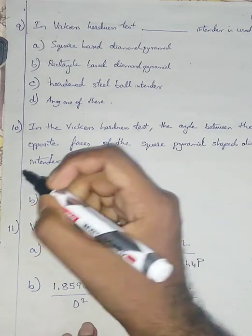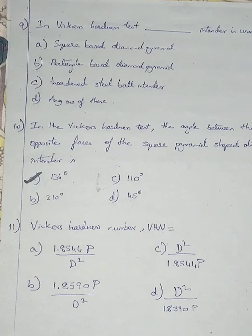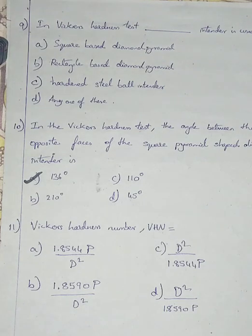You may be able to get the answer for the previous question from this question. Please comment the answer in the comment box and I will answer it in the next video. Question number 11. Vickers hardness number VHN is equal to: Option A 1.8544 P/D², Option B 1.8590 P/D², Option C D²/1.8544 P, Option D D²/1.8590 P. I am going with option A, 1.8544 P/D². This is a very important formula for solving problems.